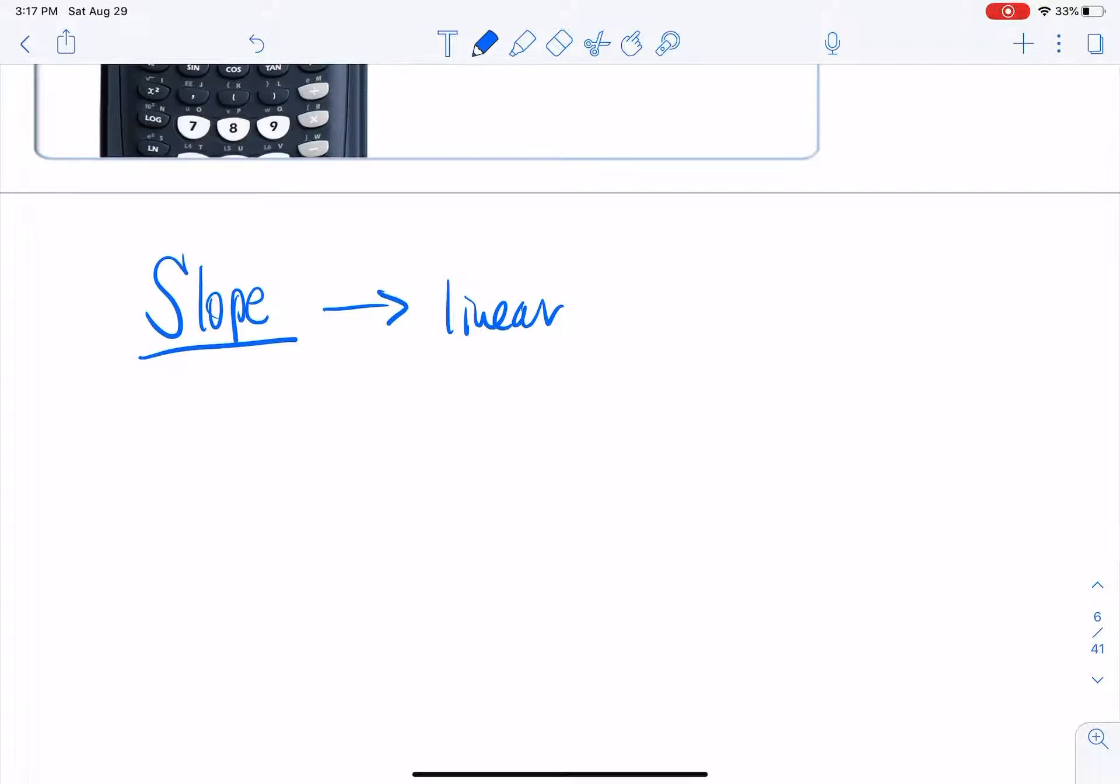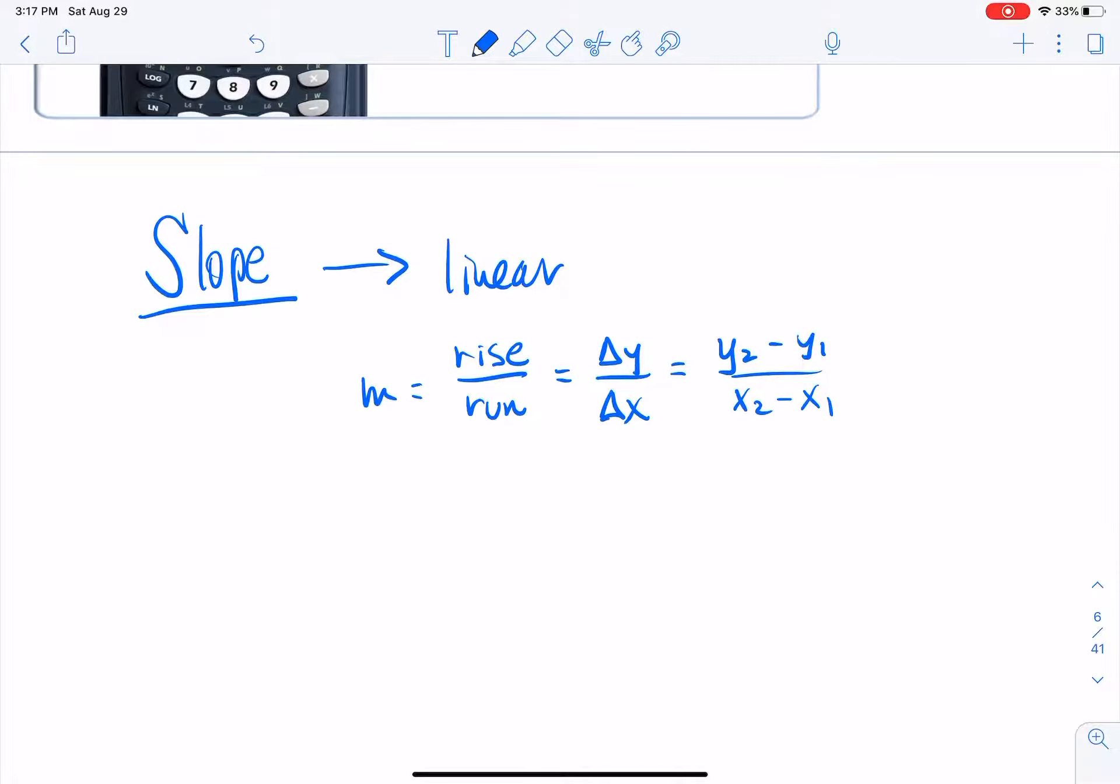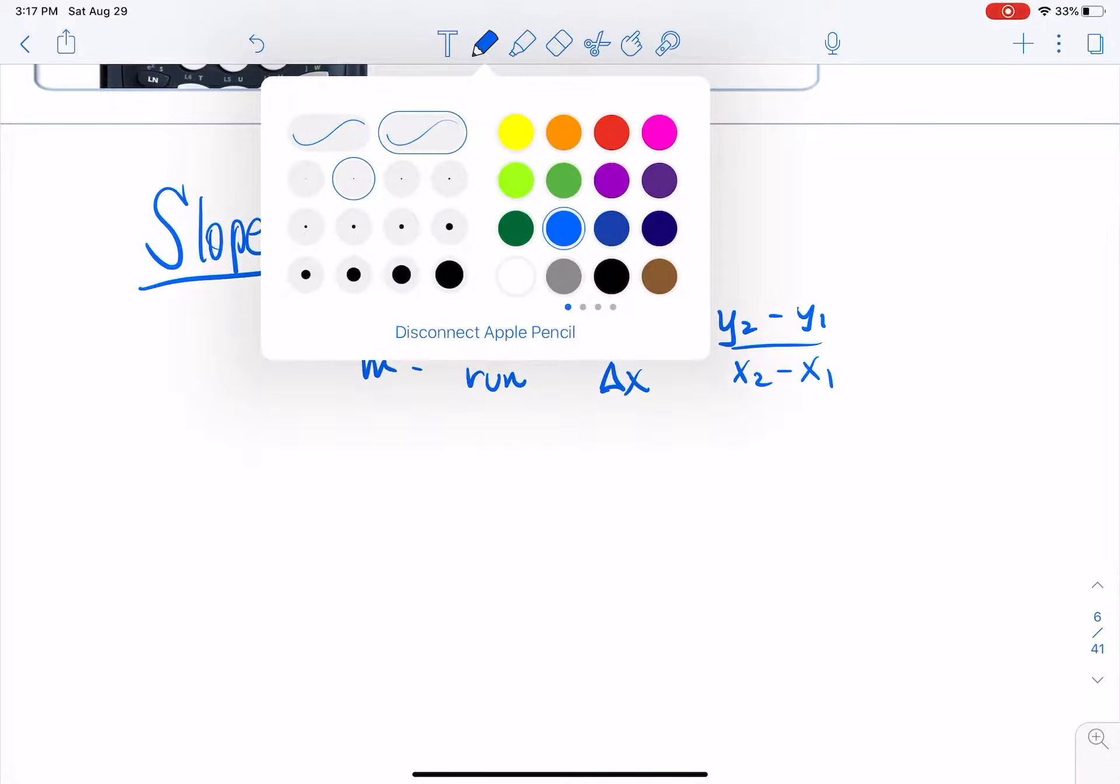Well, usually when we're talking about slope, we're talking about lines here, right? It's linear. Slope is associated with a linear thing. And let's see. We use a particular letter for that, right? It's like M. M for slope. It goes in the slope, like the slope-intercept form of a line as M.